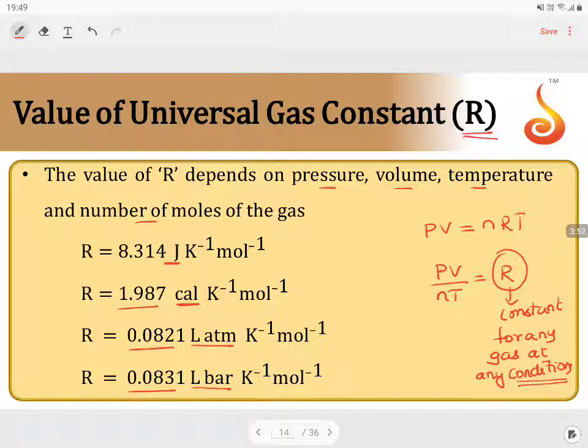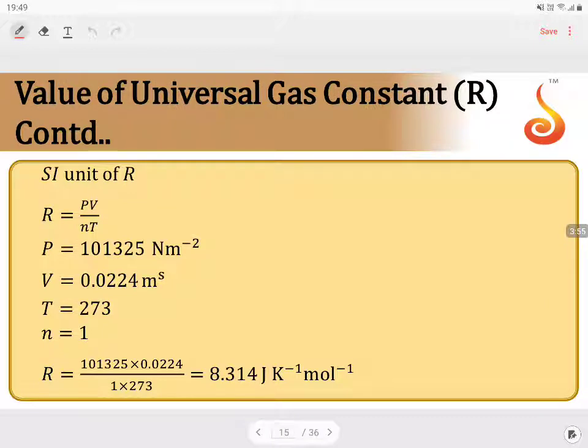If I take the SI unit for R, it is always taken as 8.314, where pressure should be expressed in terms of newton per meter square, volume should be expressed in terms of meter cube, and temperature in kelvin, number of moles.